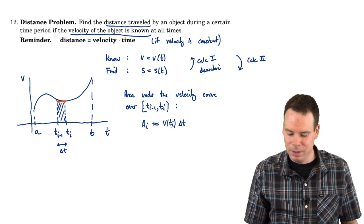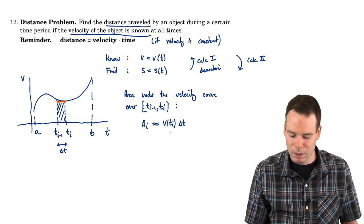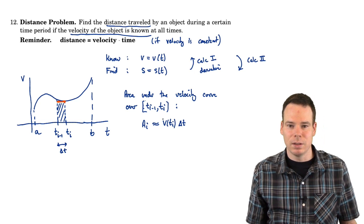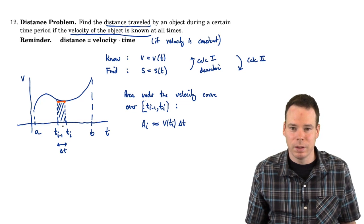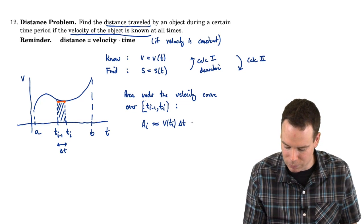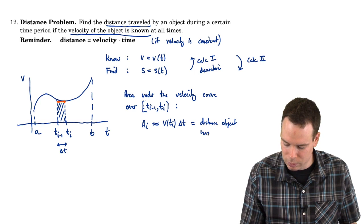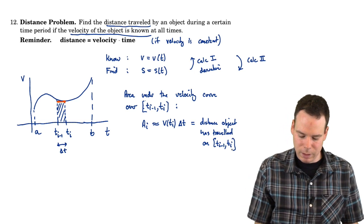Ah, velocity, time. Velocity times time. I'm assuming velocity is constant. That's just the distance. The area under the curve on this portion, on this interval, is just the distance the particle has traveled. So this is the distance object has traveled on the interval ti-1 to ti.